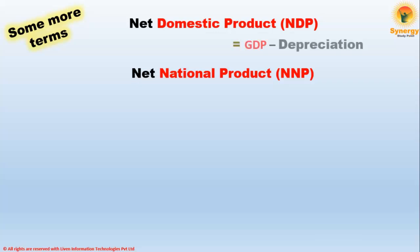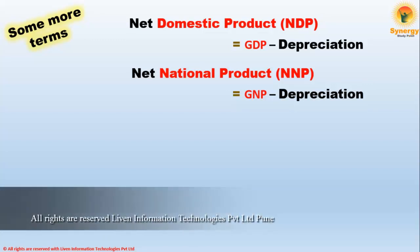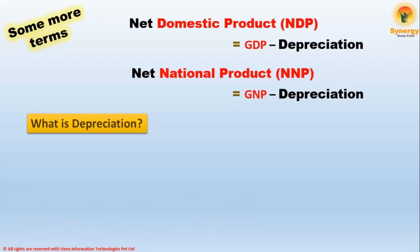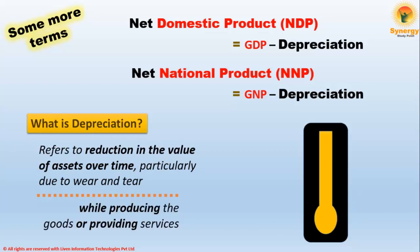NDP refers to GDP minus depreciation, and GNP minus depreciation gives us NNP. In the terms NDP and NNP, the 'G' is replaced by 'N' which refers to 'net', and we get this net value when we subtract depreciation. Depreciation refers to the reduction in the value of assets over time, particularly due to wear and tear, and it happens either while producing goods or by providing services.